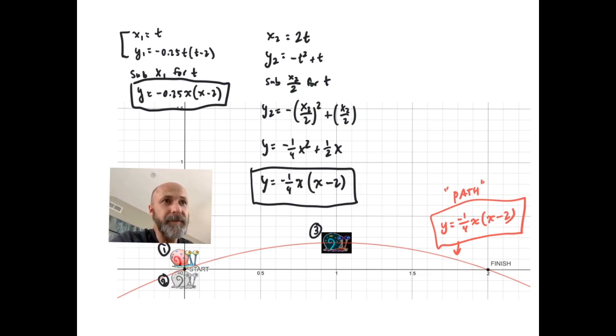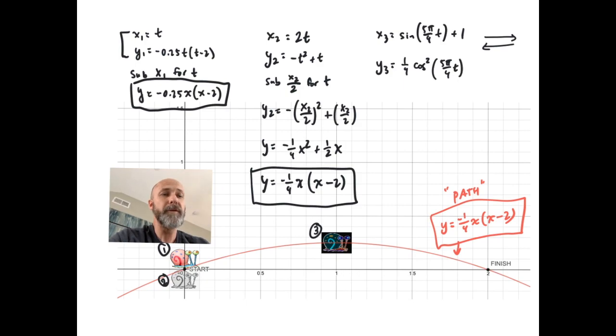The third snail, which is bizarro Gary, is the really weird one. That's the one that's bouncing back and forth between the start line and the finish. So for that one, I used the equation x₃ = sin(5π/4 t) + 1. And there's a separate video especially about parametric equations involving trig functions, but they're useful in showing this, I guess, the sinusoidal movement of the snail in this case. So for y₃, I used 1/4 cos²(5π/4 t).